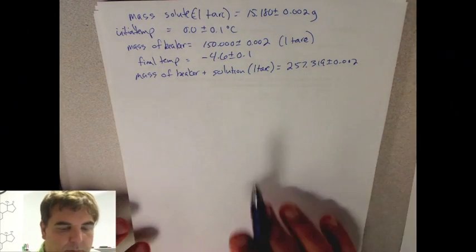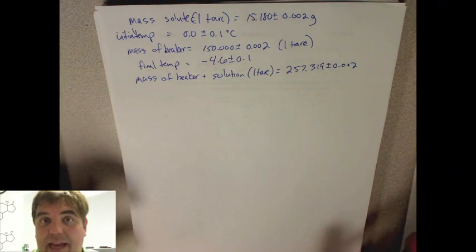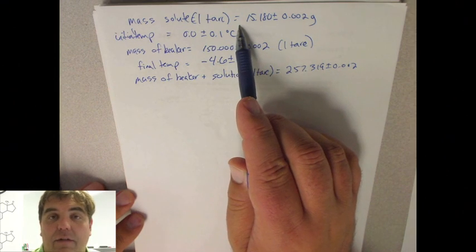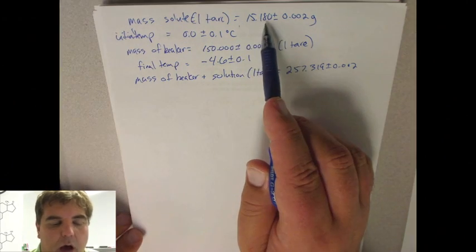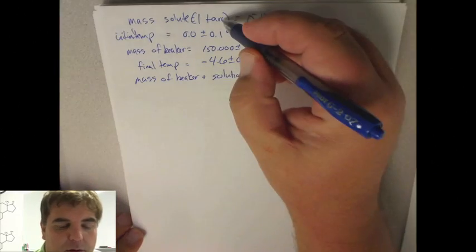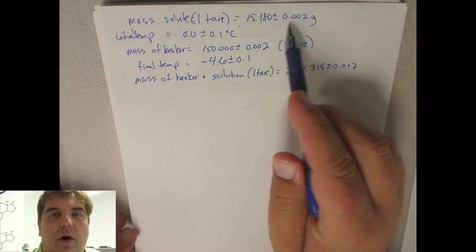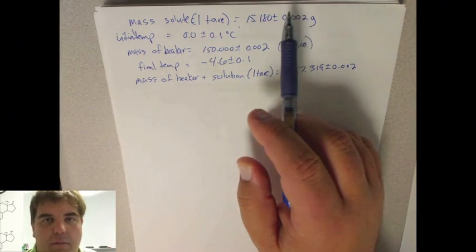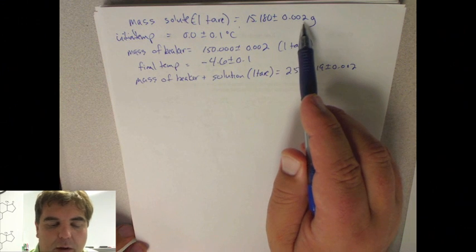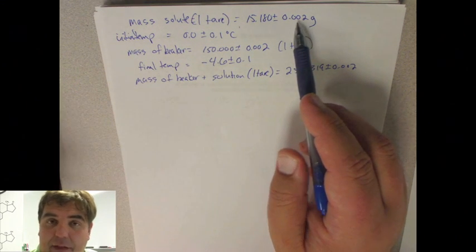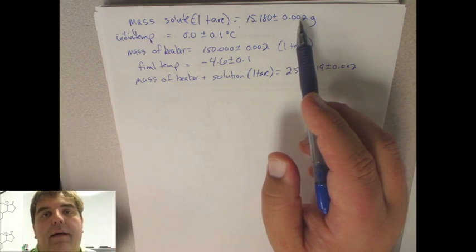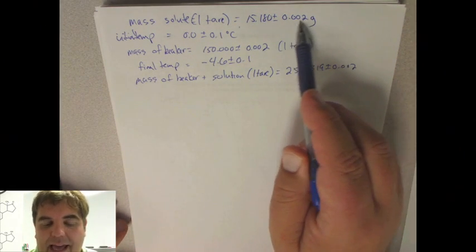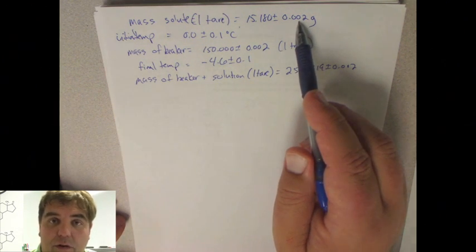Alright, so if we think about what we have in terms of data, we have the mass of the solute, which is our liquid. Let's say we're doing this for the liquid. Now, I'm going to go ahead and start incorporating uncertainty. In this case, I've done what I call one tare - I tared a beaker and then poured the solvent in and measured. The error on a balance is plus or minus 0.01 grams. The tare counts as a measurement and then your final measurement, so in my case the uncertainty would be 0.002 grams.